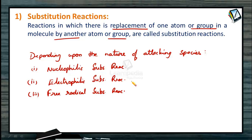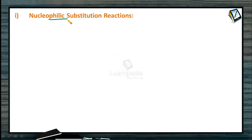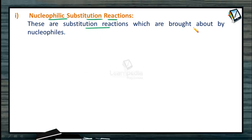Here I am not discussing the mechanisms — I will give only the brief meaning of all these types of reactions. Regarding nucleophilic substitution reactions, which will be discussed in the first chapter of organic chemistry in 12th standard — that is halogen compounds — these are substitution reactions brought about by nucleophiles, where the nucleophile is the attacking reagent.